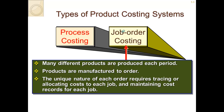Types of products that use job order costing include aircraft carriers, tankers for the military, Boeing airplanes, and construction projects. For example, we're currently putting up a new building at Elms — everything that the architect and construction workers do will be allocated to that specific job. Movie production also uses job order costing, as each movie is different and they track the real cost of the movie.